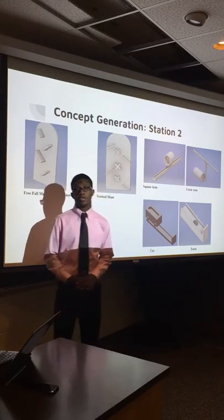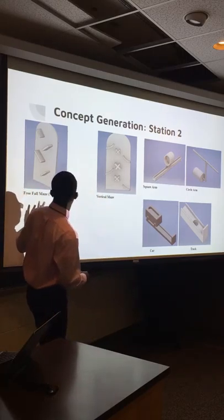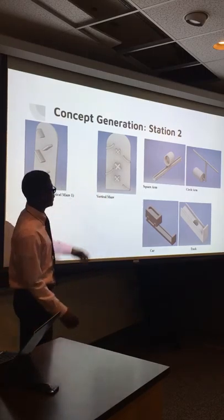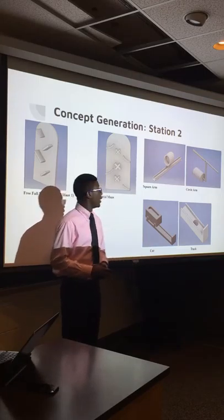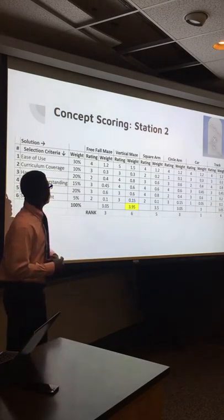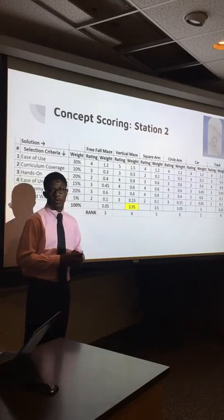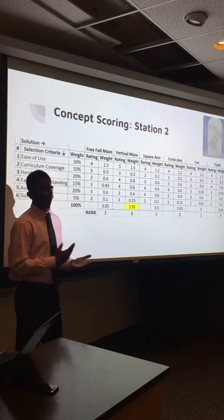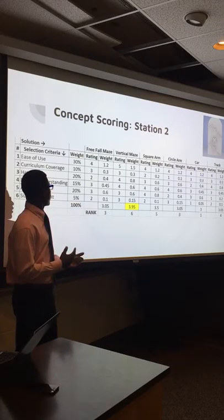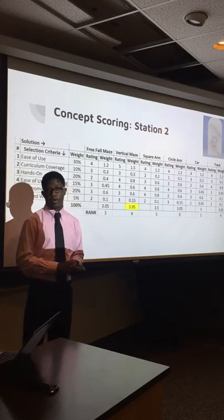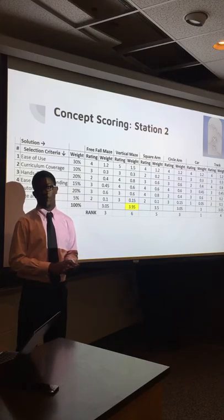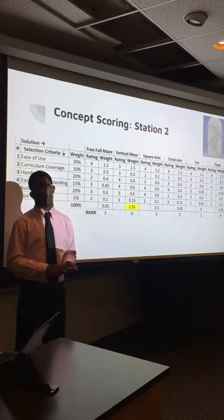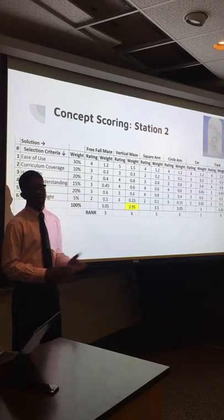For station two, these are the six solutions. The first two were vertical mazes, the next two were a square arm and a circle arm, and then we had a coil and a chute. We went with the second vertical maze. It scored the highest in the concept scoring — it was very easy to use, it covered the curriculum, and it was very understandable and easy for fourth graders to use, which we really focused on.